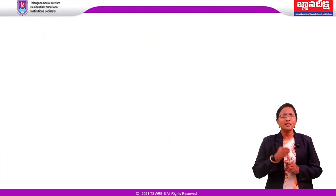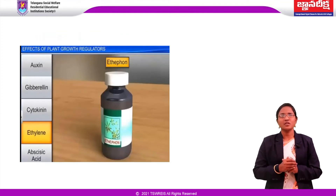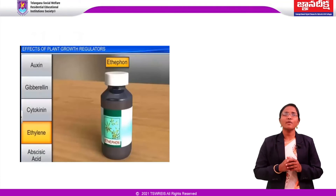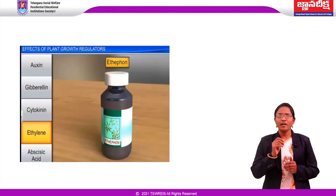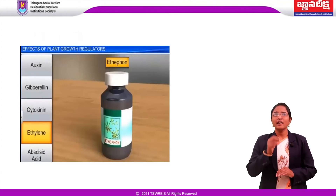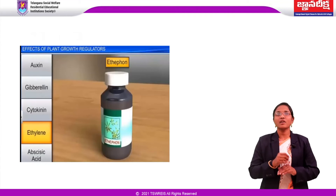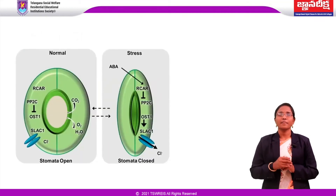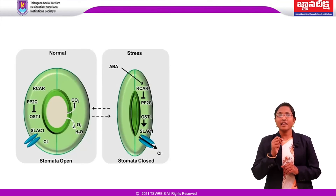Ethylene breaks seed dormancy and bud dormancy. It promotes formation of female flowers in cucumber and promotes root growth and root hair formation. Ethylene promotes internode and petiole elongation in deep water rice plants, helping leaves or the upper part of the shoot to remain above water. The aqueous form of ethylene is called ethephon; it promotes fruit ripening in tomatoes and apples, accelerates abscission in flowers and fruits, and promotes female flowers in cucumber to increase their yield.